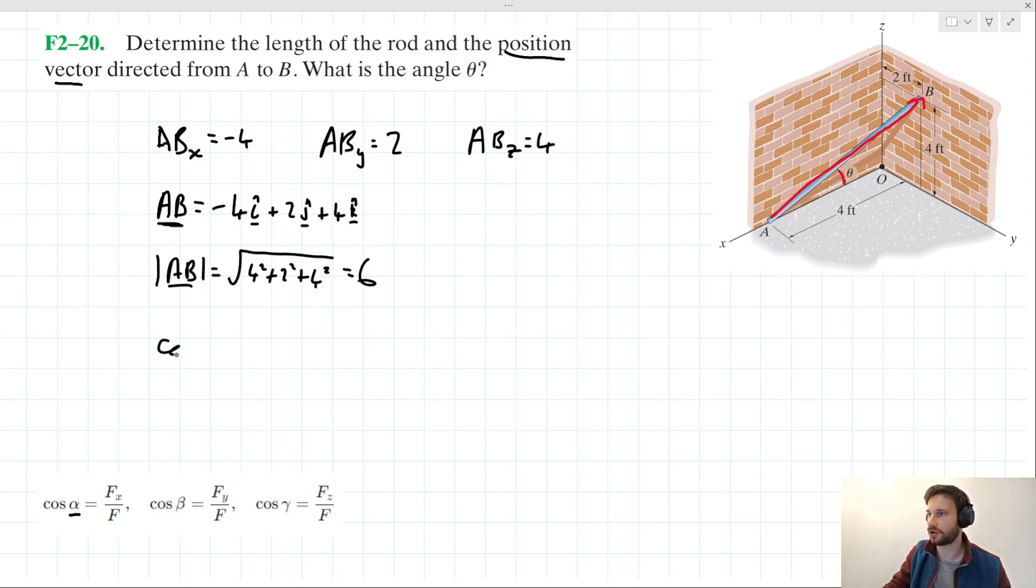So we could say that the cos of alpha in this case is equal to minus four over six. So we could say, taking the inverse cos of both sides, that alpha is equal to the inverse cos of minus four over six, which when we bring in our calculator gives us a value of 131.8.